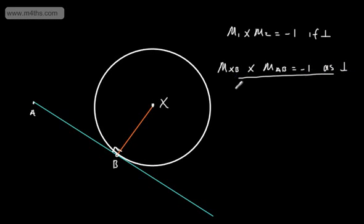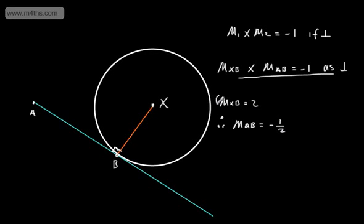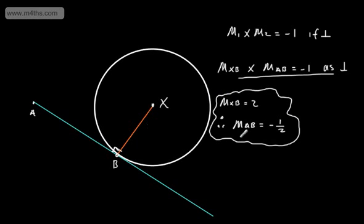So let's look at an example of that. Let's say now that the gradient of XB — mxb — was going to be equal to 2. Therefore, what we could say is that mab was the negative reciprocal, and that would be minus 1/2. So that's just an example right there. All we're looking at now is the two gradients, and we multiply them to get minus 1. We're going to use this property throughout a range of different questions involving tangents — you're just looking to say that this line is at right angles.